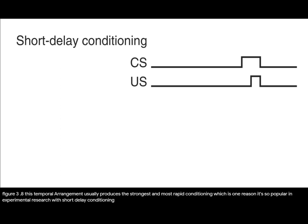With short delay conditioning, if a CS predicts the US, it will become excitatory. If a CS predicts the absence of the US, it will become inhibitory.